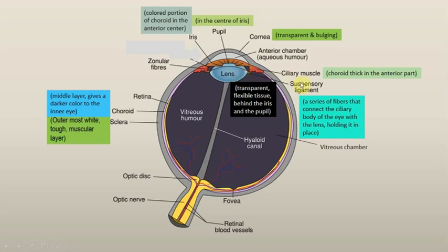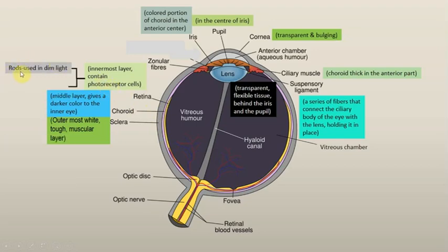After the lens we have the third layer of the eye — the retina. It is the innermost layer of the eye which contains the photoreceptor cells. So: layer one is the sclera, layer two is the choroid, and the innermost is the retina. The retina has two types of photoreceptor cells: rods, which work in dim light, and cones, which are used to visualize colors.